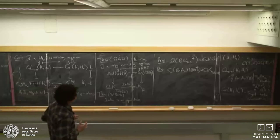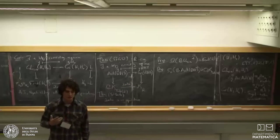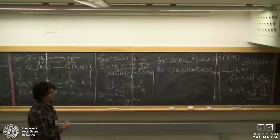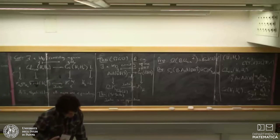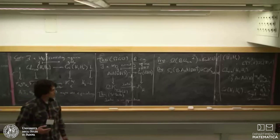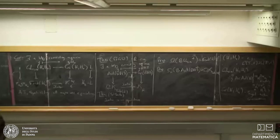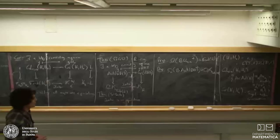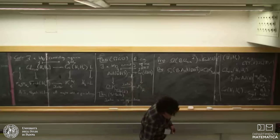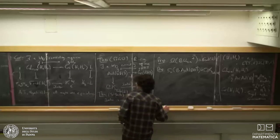These are the properties I want this map and the Grassmannian to have: this relationship to index theory, fitting into these commuting squares, being natural with respect to R. That will allow us to do constructions for local invariants of schemes called tame symbols or Contou-Carrère symbols, and to revisit material on double loop groups due to Frenkel-Zhu from around 2010. Now let me spend the second half of my talk actually building this construction.